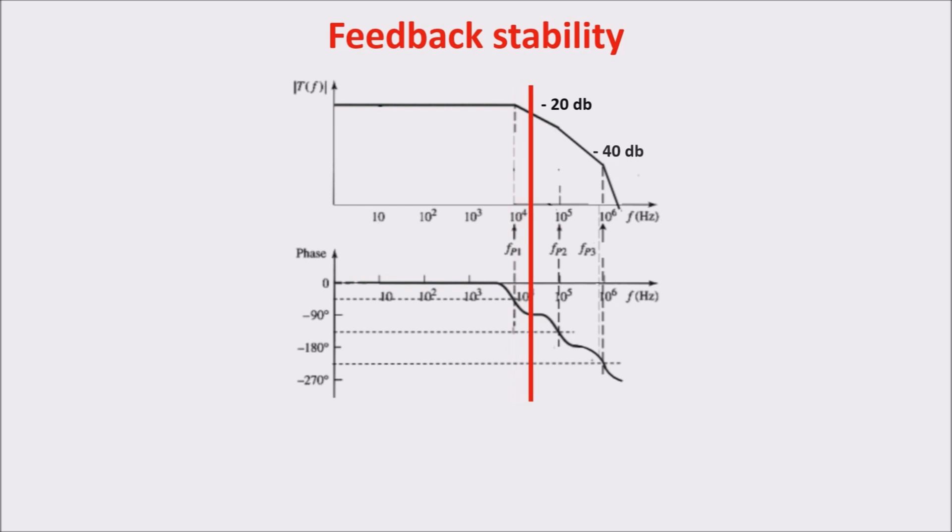At the second pole, the phase shift is 135 degrees, going towards 180 degrees, and the gain decreases of 40 dB per decade. At the third pole, the phase shift is 225 degrees, going towards 270. So, in this case, you see there are frequencies in which the phase shift is 180 degrees. So, the signal in that frequency is added to the input rather than subtracted, producing instability.